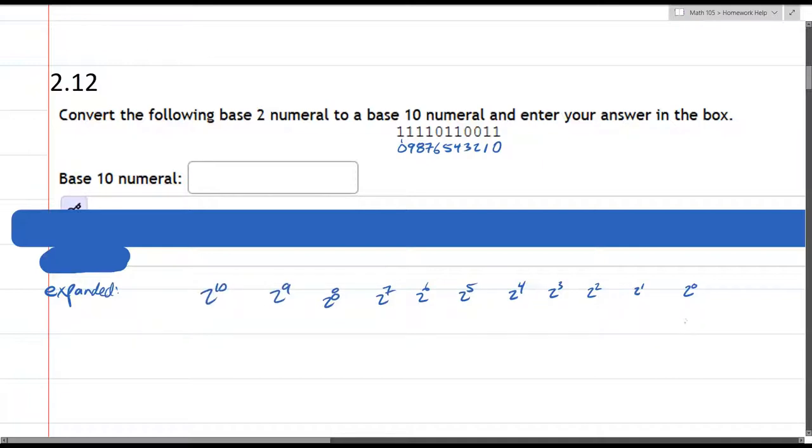So 2 to the 0 is 1. 2 to the 1st is itself 2. 2 squared, 2 times 2 is 4. 2 times 2 times 2 times 2, 2 cubed is 8. The other way to think about these, you're just doubling every time as you move over.